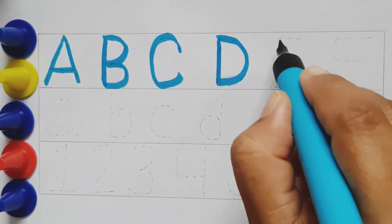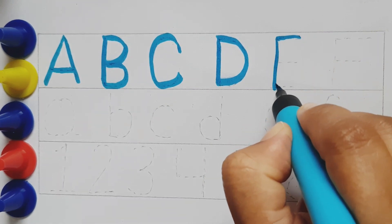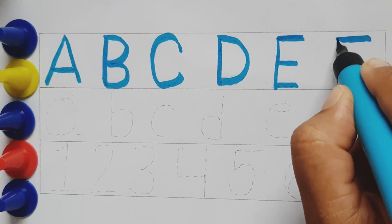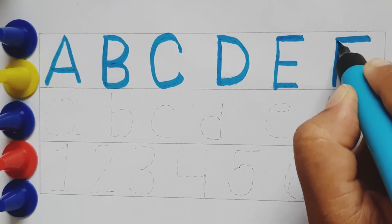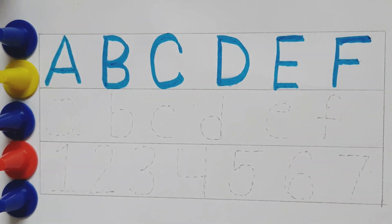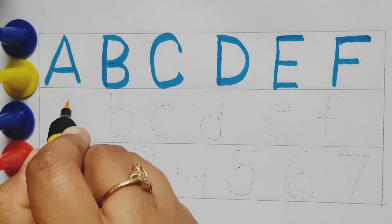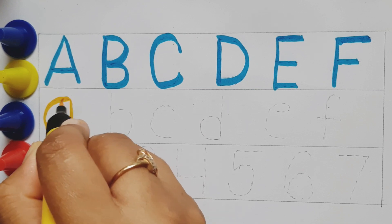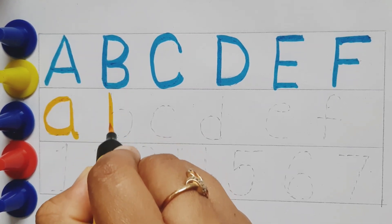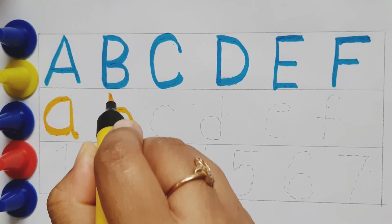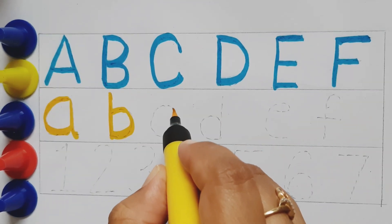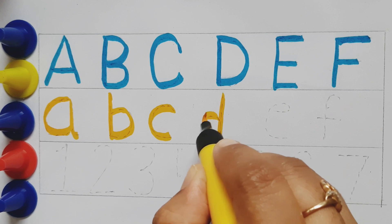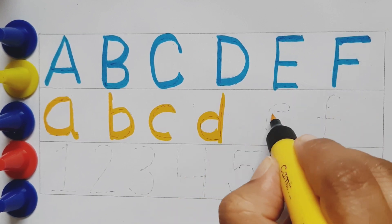D for door. E, capital E, E for egg. F, capital F, F for fish. Small a, A for aeroplane. Small b, B for bat. Small c, C for cat. Small d, D for duck.